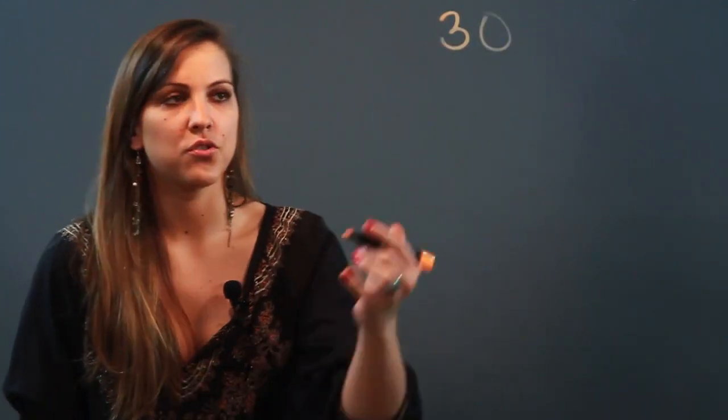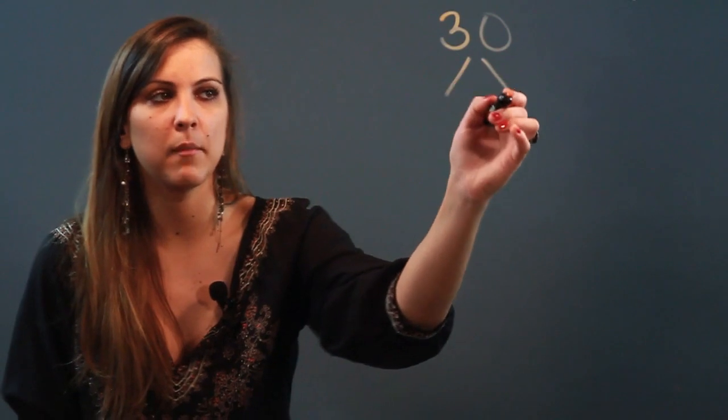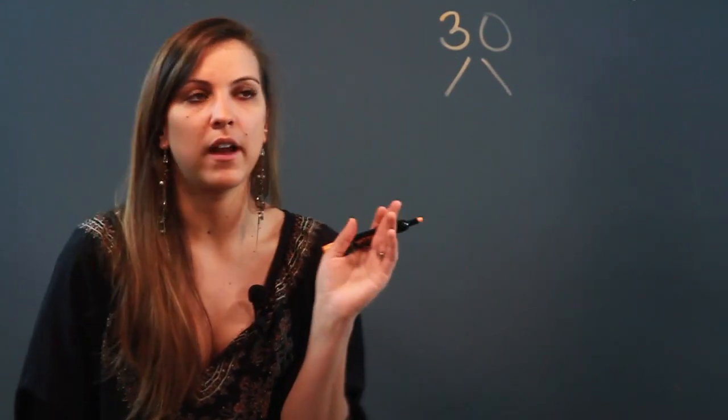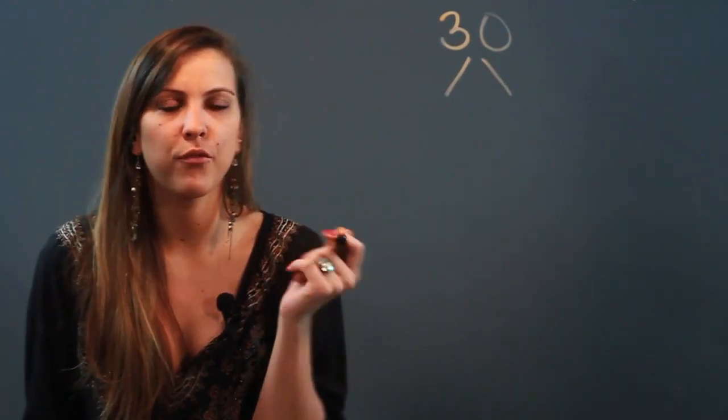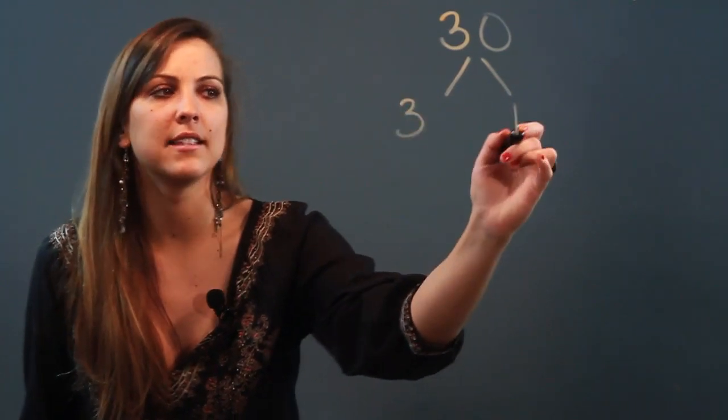We're going to use a factor tree. The factor tree tells us to split the number 30 into two factors, any two factors that I want. To start with, the first two things that come to mind are 3 and 10.